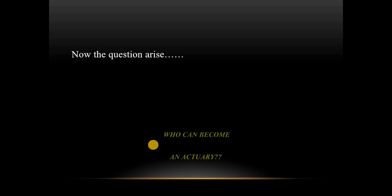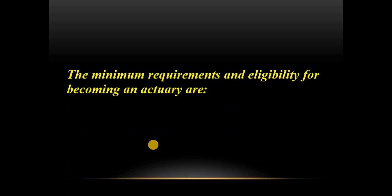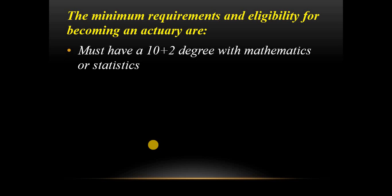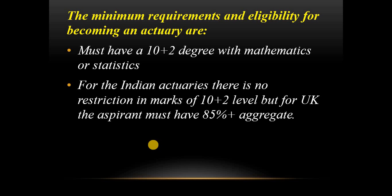How does one become an actuary? How many papers must you clear — is it fifteen, four, or five? The minimum requirement at the 10+2 level is maths or statistics, and the examination is conducted only in English. If you want to directly take the UK route, you need 85% in maths. If you don't have 85%, you must first give the CT1 examination, which serves as your entrance into the structure, after which you can proceed to CT2, CT3, and so on.